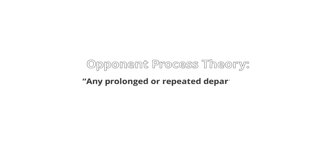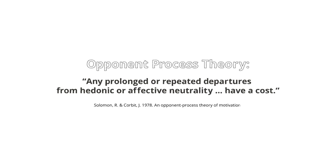In the 1960s, social scientist Solomon and Corbett called this reciprocal relationship between pleasure and pain the opponent process theory. Any prolonged or repeated departures from hedonic or affective neutrality have a cost. That cost is an after reaction, which is opposite in value to the stimulus. Or as the old saying goes, what goes up must come down. This return to a level balance is called homeostasis.